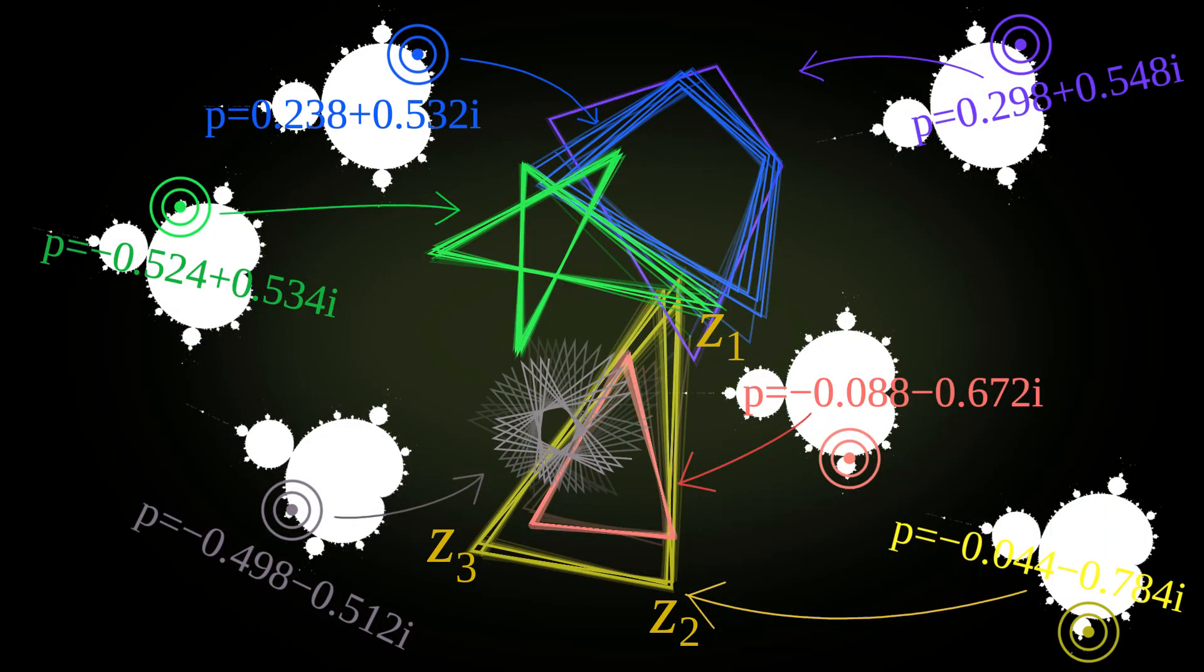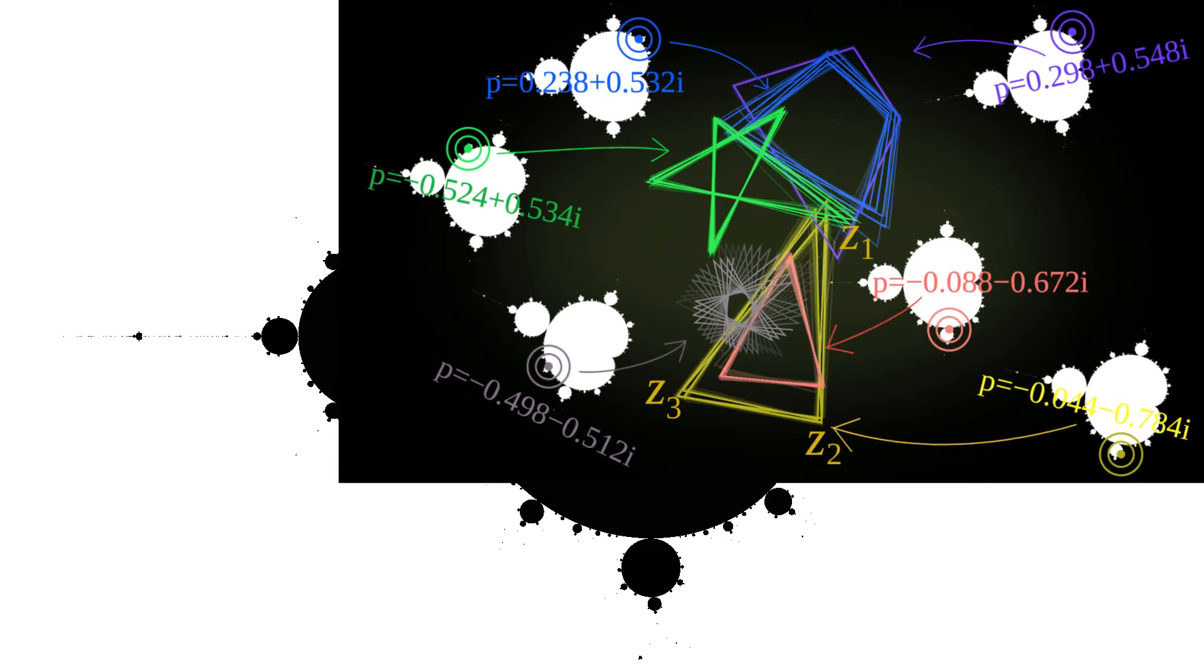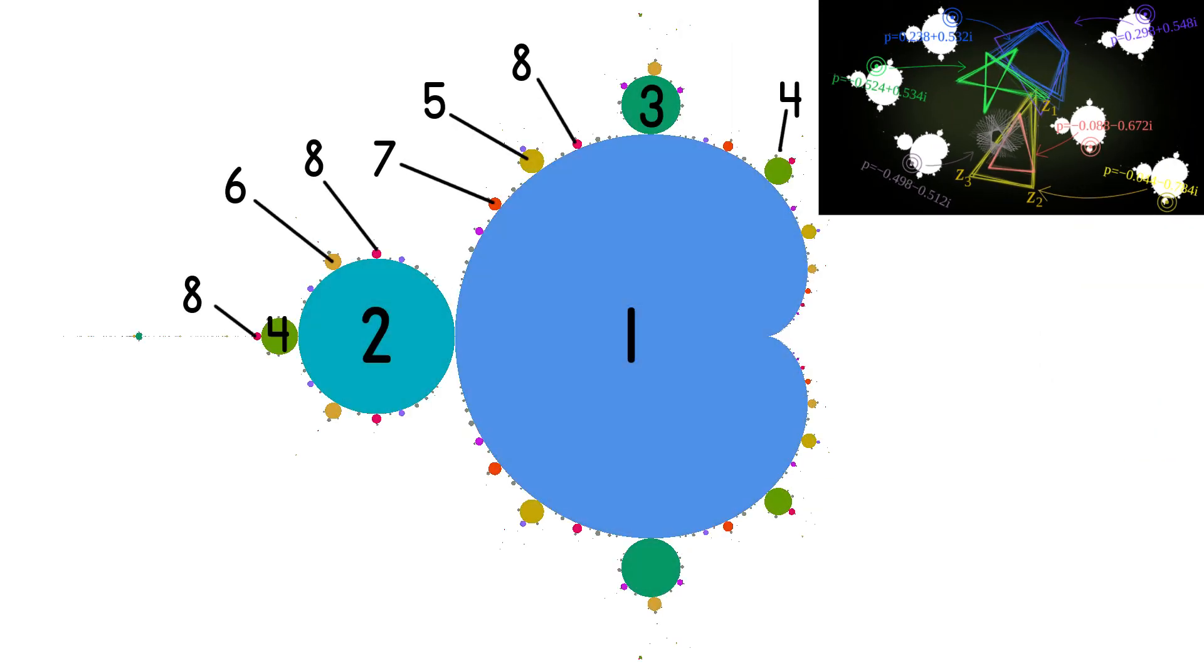This image shows connected points of the Zn sequence for various choices of p. The whole Mandelbrot set can be divided into subsets based on the number of steps in such a cycle.